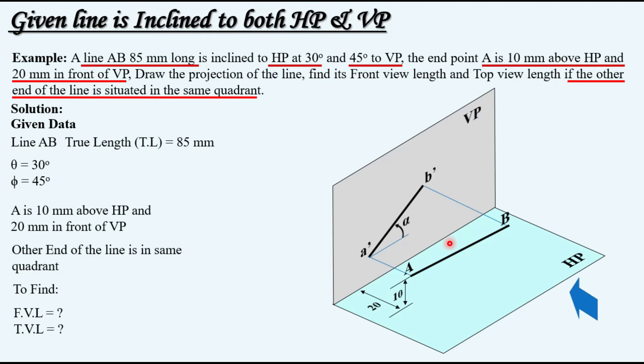The angle of the front view with XY will not be theta — it will be another angle called alpha, which is an apparent angle. Similarly, looking from the top, the corresponding top view points A and B can be obtained, and the line joining them is our top view. There will be another apparent angle in the top view called beta. In the top view as well, the true length cannot be seen — it will be a reduced length. So neither in the front view nor the top view will we see the true length. We will use a procedure to find this reduced length from the given true length.